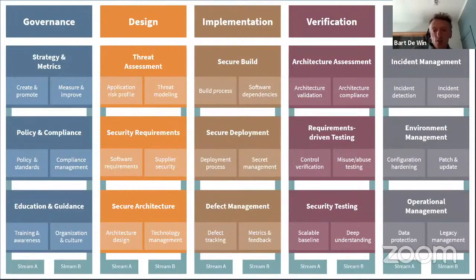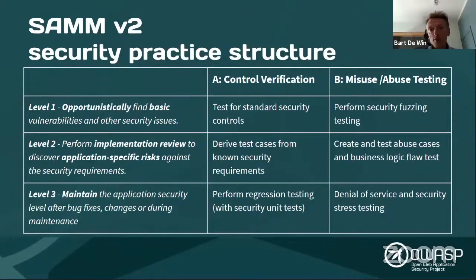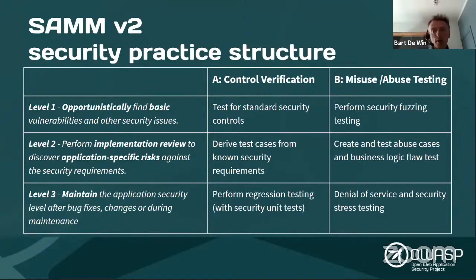Looking at a security practice in detail: every security practice has three levels of maturity. Level one means an opportunistic implementation of a particular objective — for example, doing abuse testing. Level two means implementing it in a more structured way, making it application-specific and focusing on application-specific risks. Level three is a more advanced implementation, ensuring you have feedback loops to continuously improve and update your activities. These three levels of maturity apply to all the different security practices.